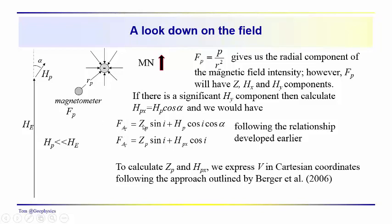So we have F sub AT is equal to Z sub P times the sine of I, just using this equation that we developed earlier, plus H sub P times the cosine of I, times the cosine of alpha, if alpha is significant.